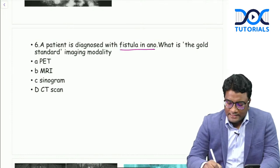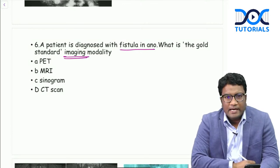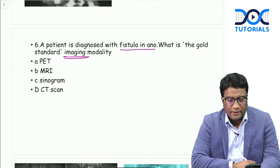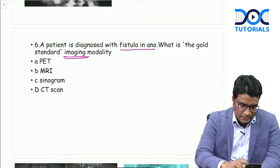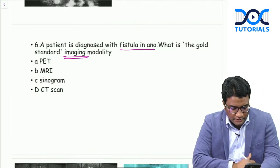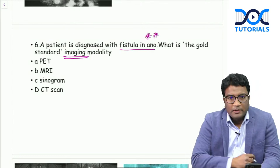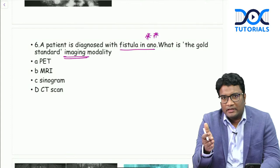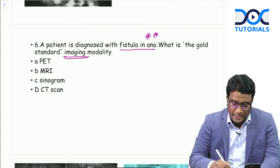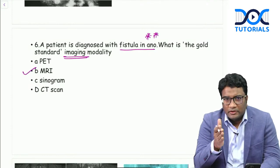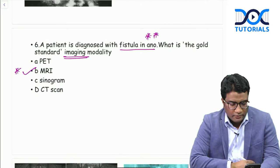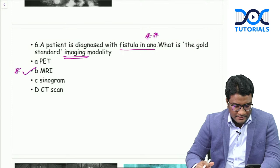A patient diagnosed with fistula in ano - what is the gold standard imaging modality? Options: PET scan, MRI, sinogram, or CT scan. For fistula in ano, you need to know the correct planes to determine whether it is trans-sphincteric or inter-sphincteric, since management differs accordingly. MRI, being a multi-planar imaging modality, helps you look at the fistula in relation to the sphincters around the anal canal. The gold standard for fistula in ano is MRI.